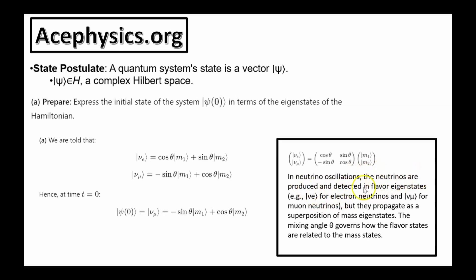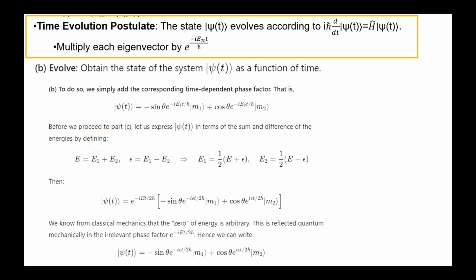In neutrino oscillations, the neutrinos are produced and detected in flavor eigenstates — for example, the electron neutrino or the muon neutrino — but they propagate as a superposition of mass eigenstates. The mixing angle theta governs how the flavor states are related to the mass eigenstates.